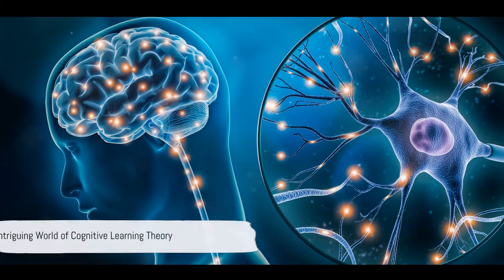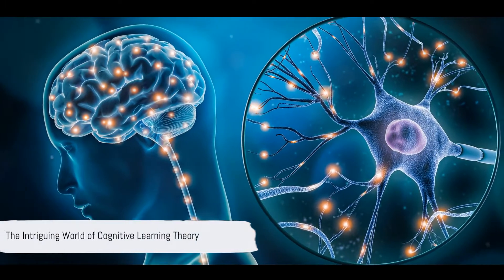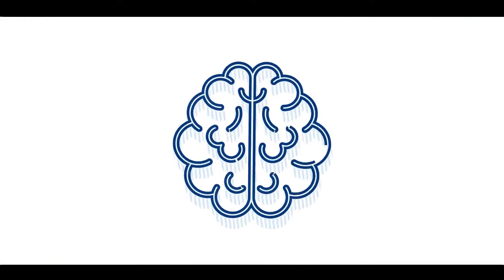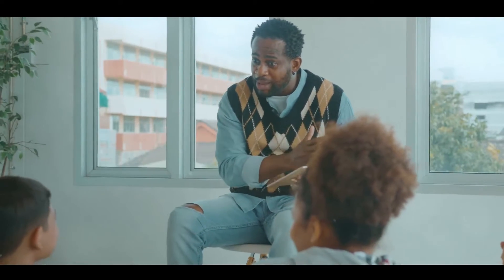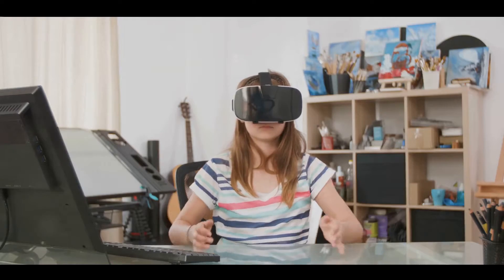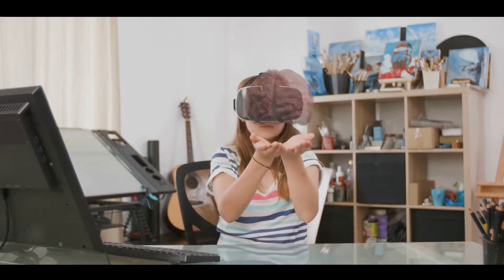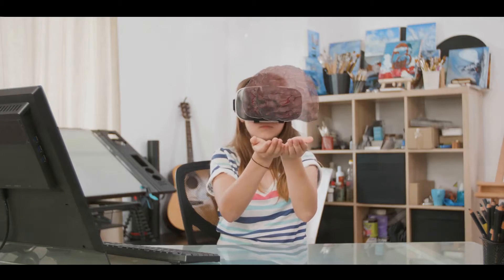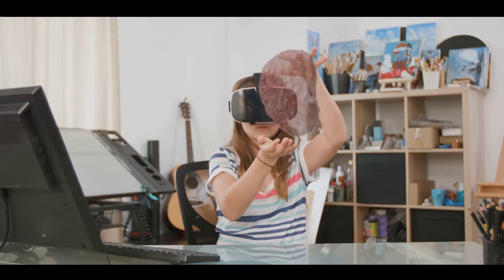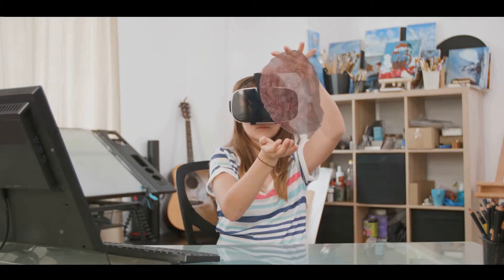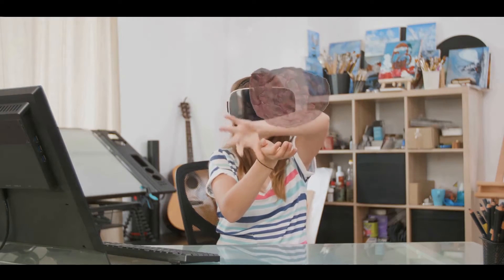Have you ever wondered how our brain processes information and helps us learn? That's where the fascinating world of cognitive learning theory comes in. This theory, which had its origins in the mid-20th century, is like a roadmap of the mind, guiding us through the intricate pathways of learning.